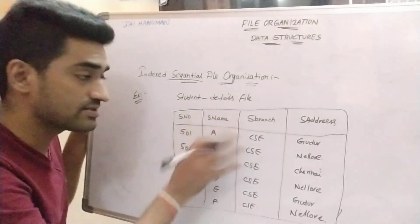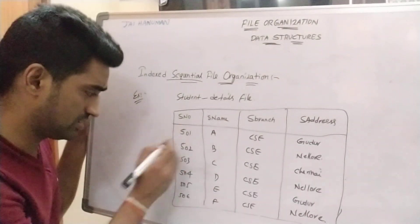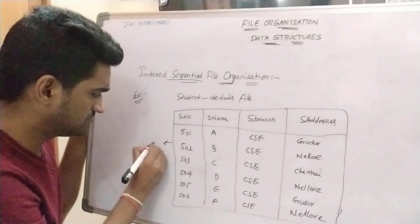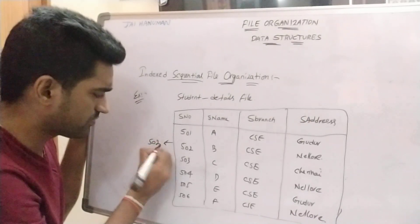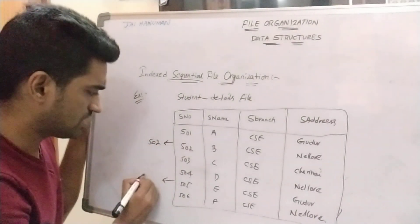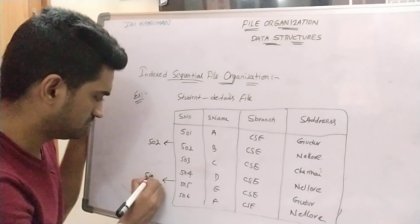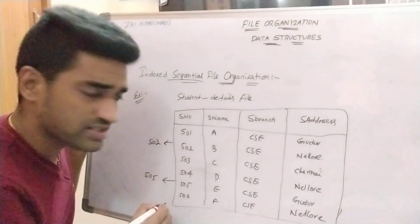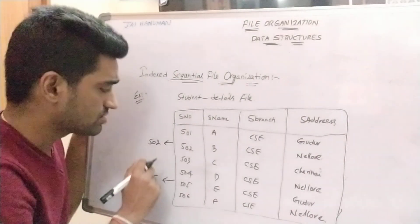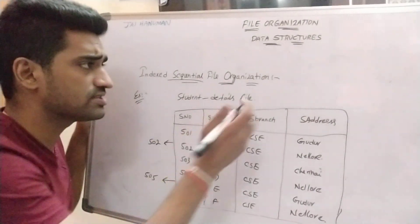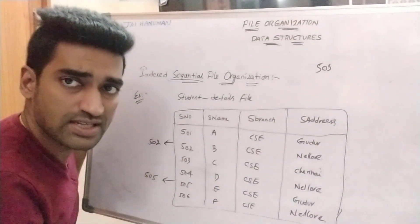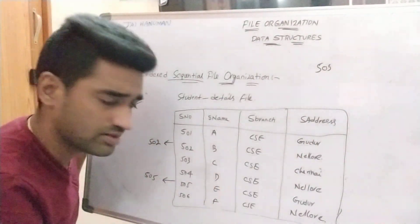For suppose I want to make this file an indexed sequential file organization. Here I have set this is the lower index value and this is the higher index value. For suppose I want to change the 503 student details by using indexed sequential file organization.